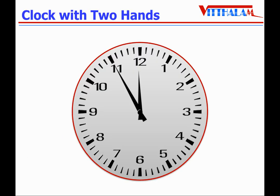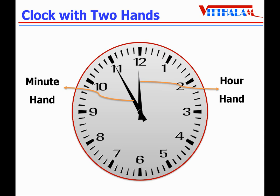Normally a clock has two hands: a longer hand and a shorter hand. The longer hand is called the minute hand. The minute hand moves from one small division to the next small division in one minute. The minute hand goes one round in one hour, therefore the minute hand covers 60 small divisions in one hour.